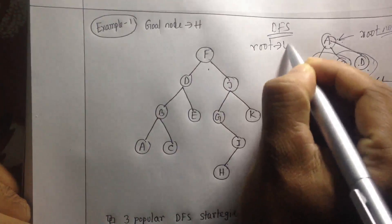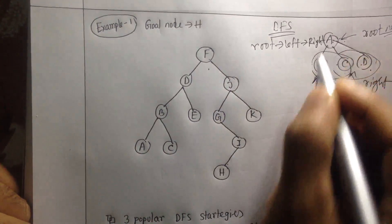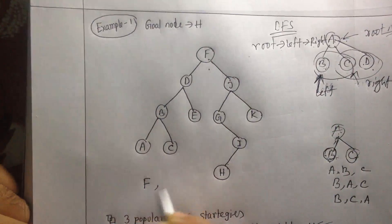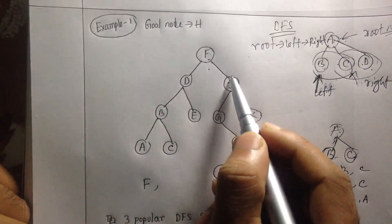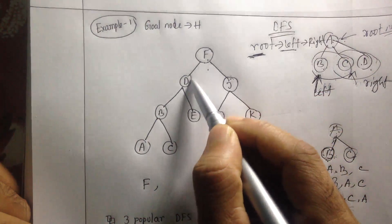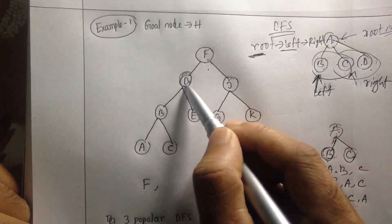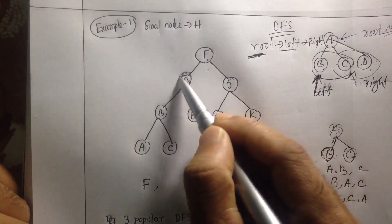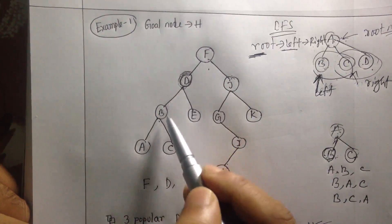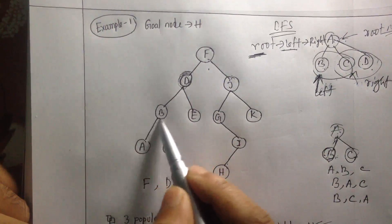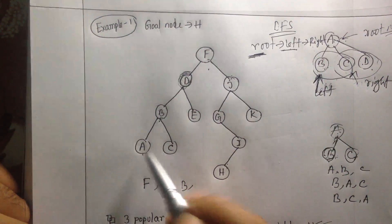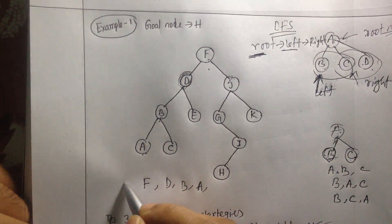Let's get started with the example. I'll begin with the root node F. You have two options — go left or go right — but after taking the root node you must go left. So I go left and find D, which is also a root node at that level. I follow the same rule: root, left, right. I go left again and find B. Then I go left again and find A. Since A has no children, we stop going further in that direction.